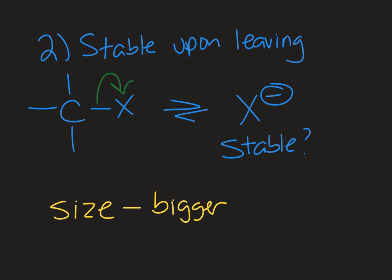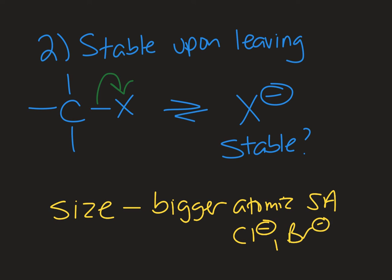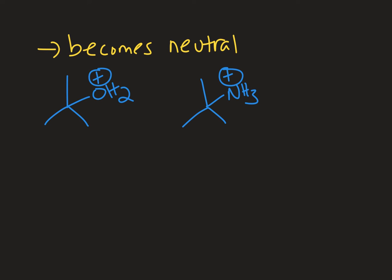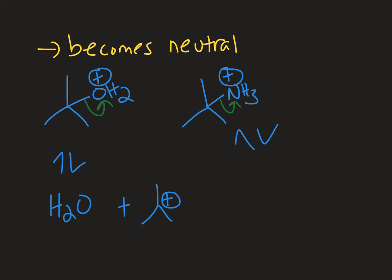The bigger the atomic surface area, the more stable that charge is going to be. So large anions like chloride, bromide, and iodide are all stable because they're large atoms with a lot of surface area to spread that charge out over. Another common leaving group is one that is protonated and positively charged, so that it becomes neutral upon leaving. The water molecule is a common leaving group, and so is ammonia, because upon leaving you just get neutral water or ammonia.